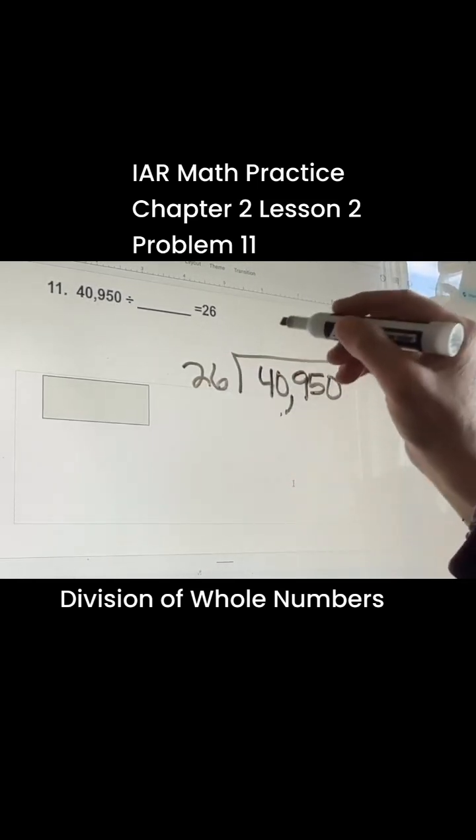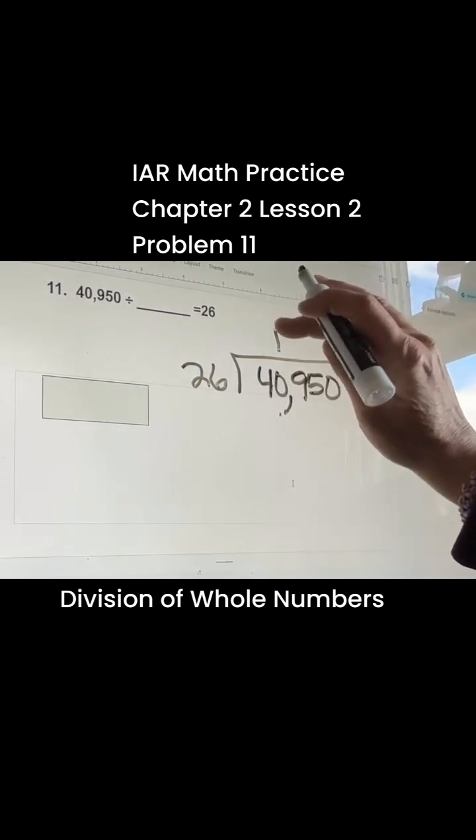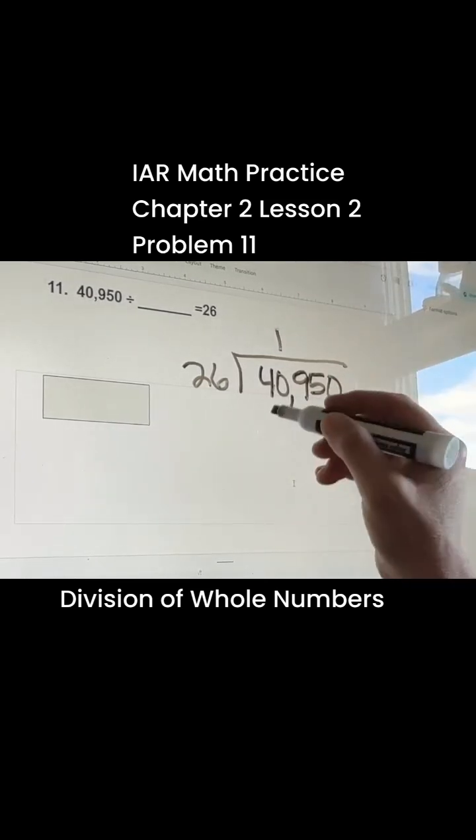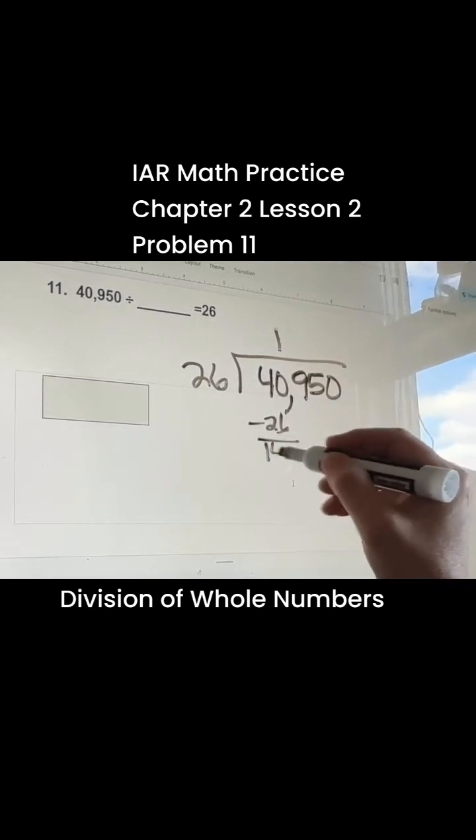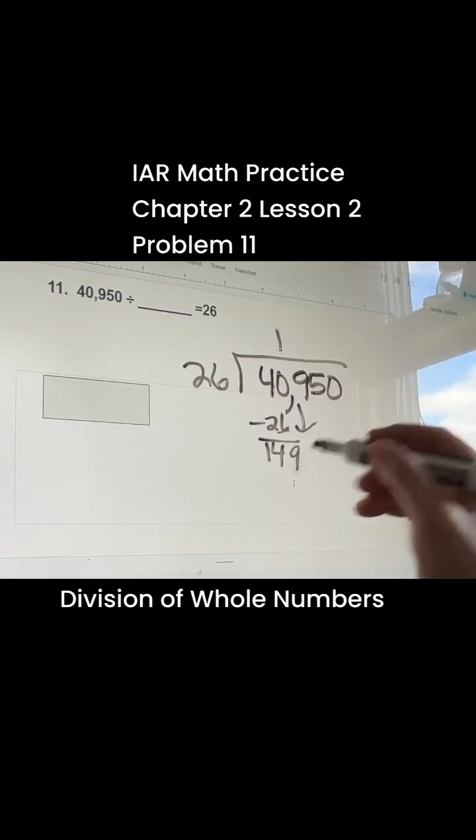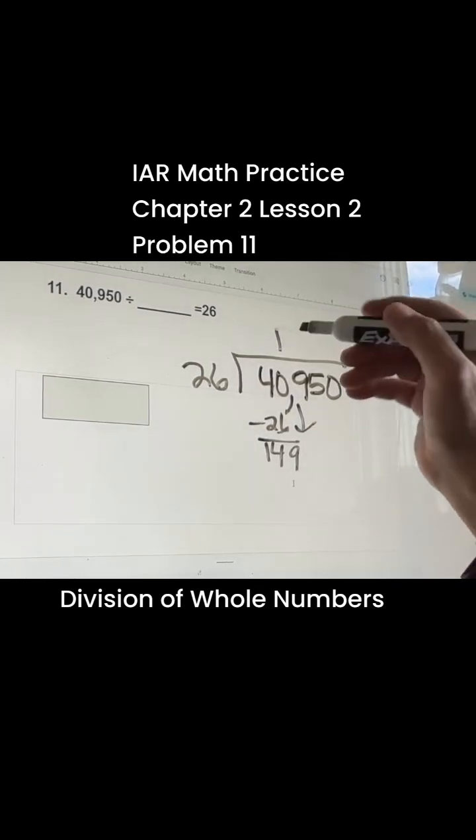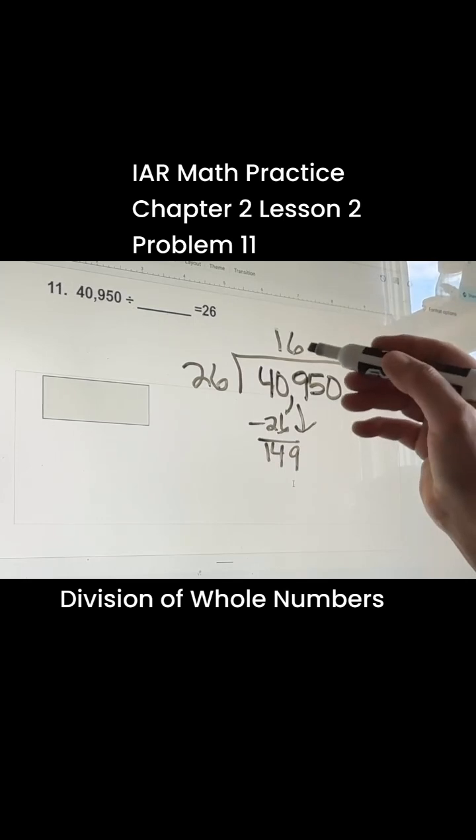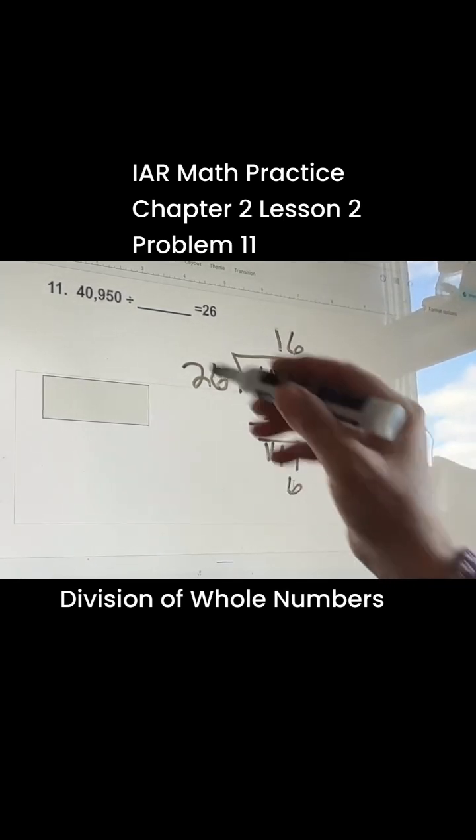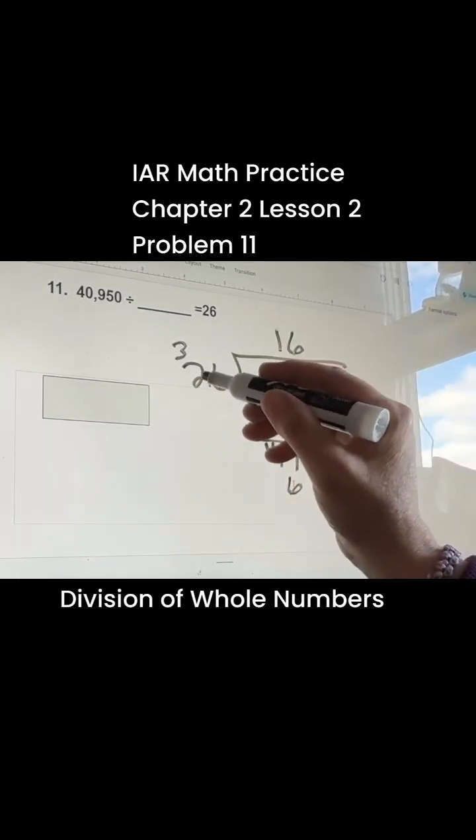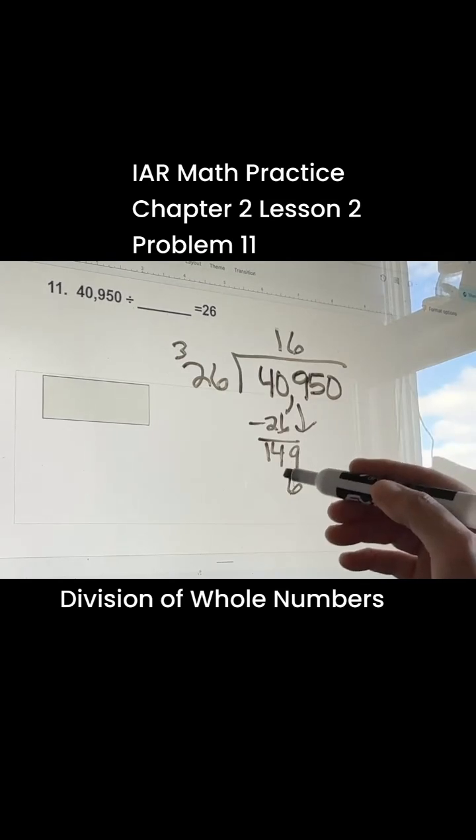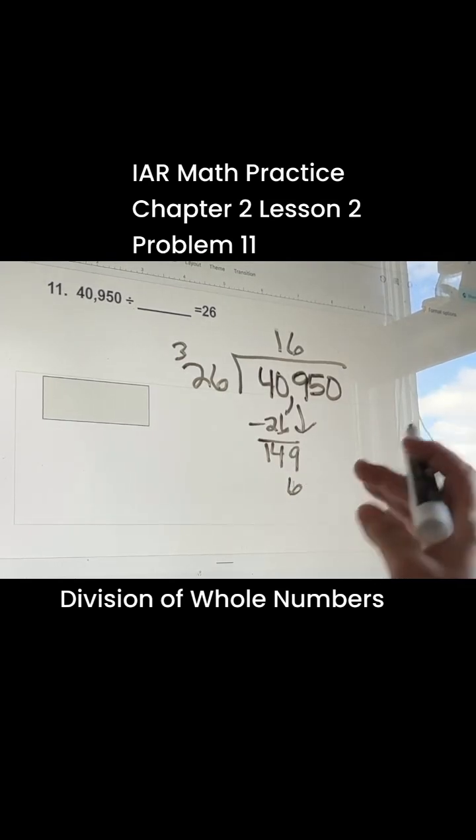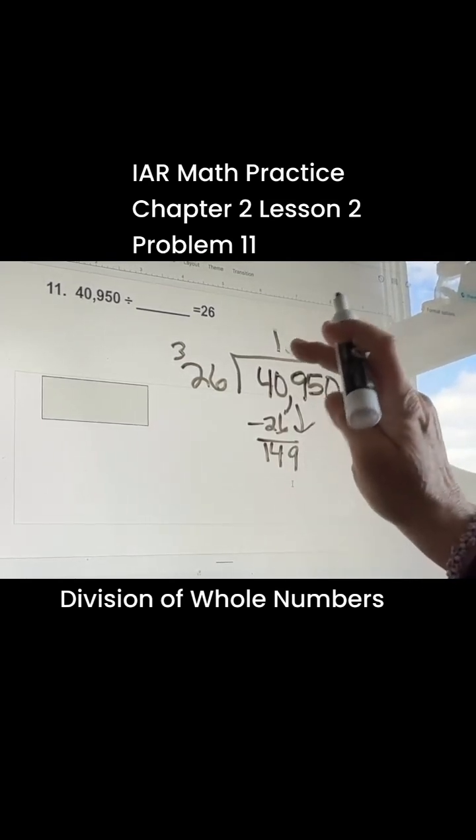So 26 goes into 40 one time. Make it look nice. 26 will be 14, bring down this 9. I'm going to guess 6 times. 6 times 6 is 36, 6 times 2 is 12, plus 3 is 15. Too high, got to go back.